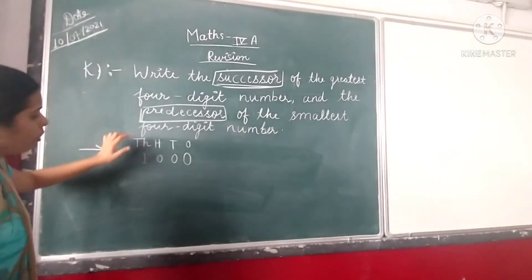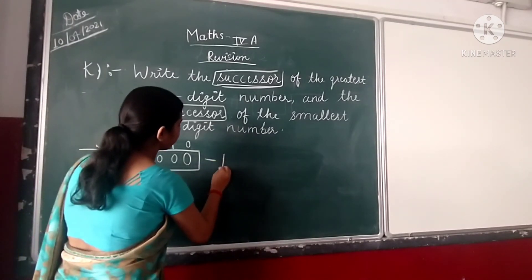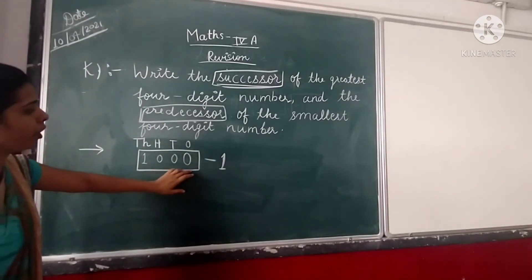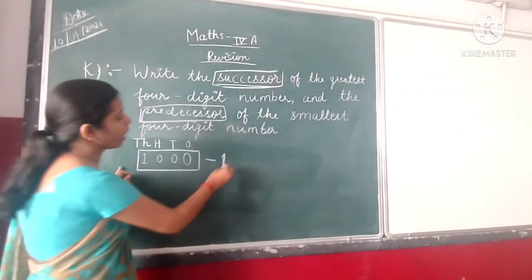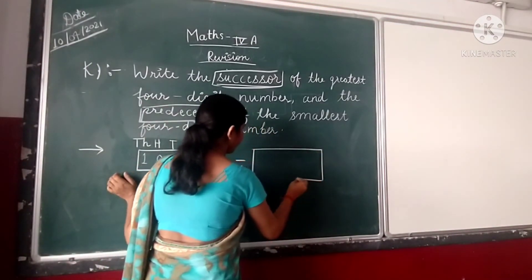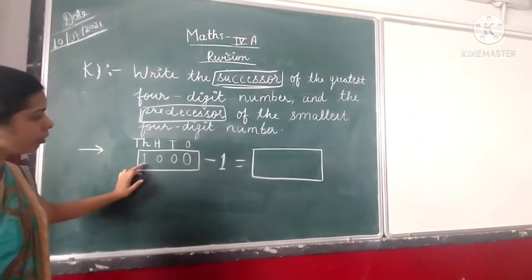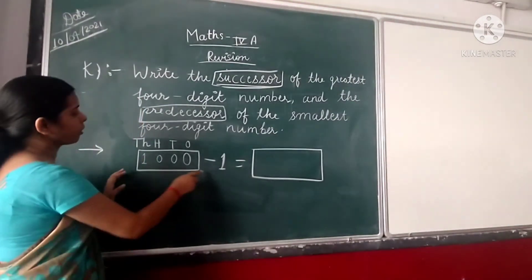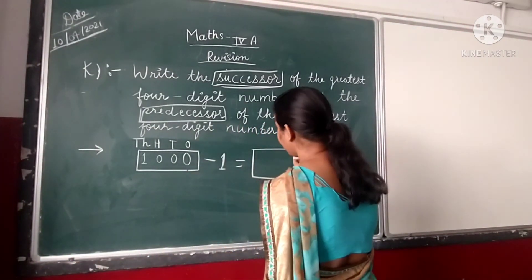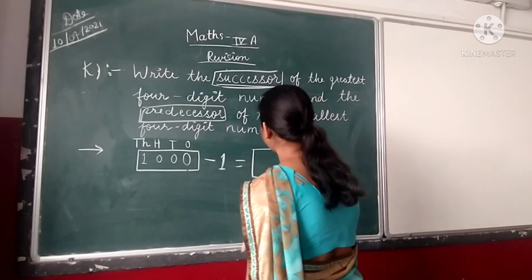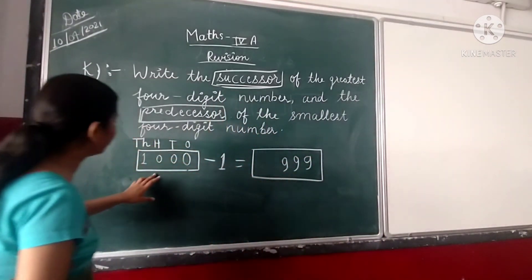In predecessors, we subtract 1 from the given number. When we subtract 1 from the given number, we get another number, and this number is known as the predecessor of the given number. When we subtract 1 from 1000, we get 999. Nine hundred ninety nine is known as the predecessor of one thousand.